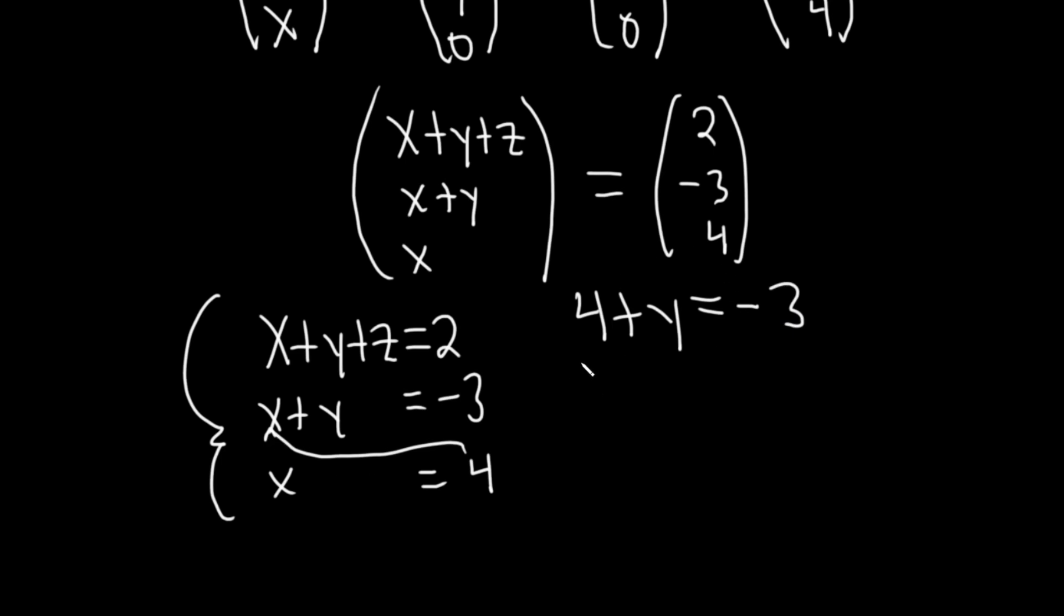And then you can solve this by subtracting 4 from both sides. So minus 4, minus 4. So you have y equals negative 7.